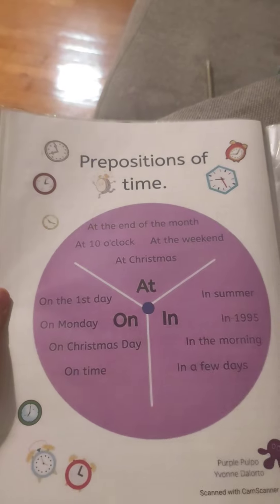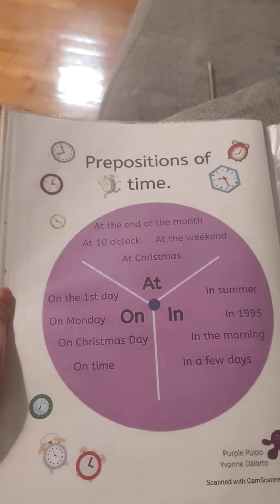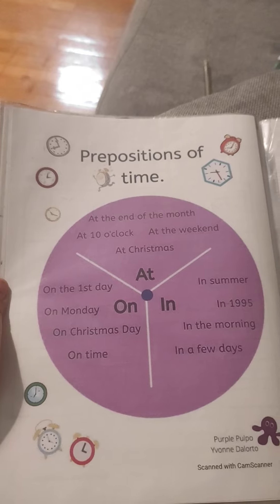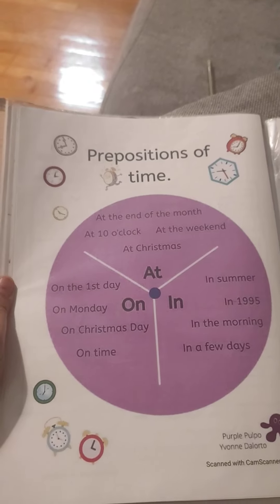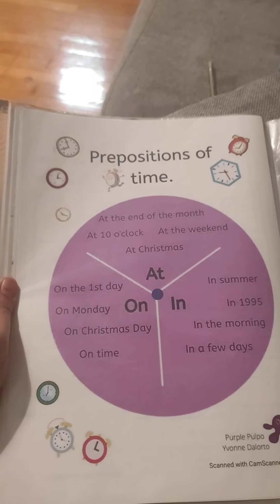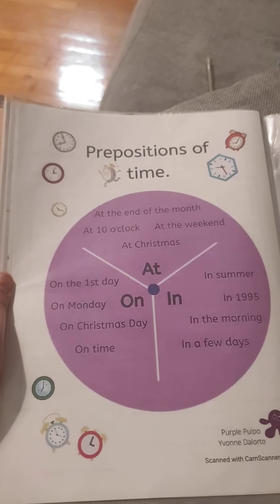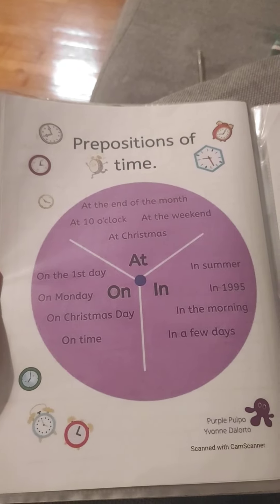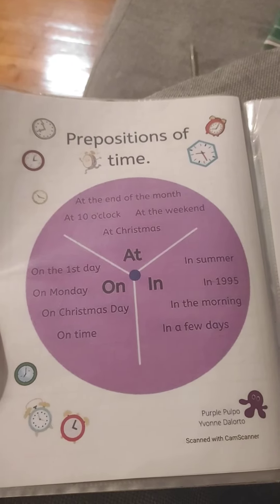Preposition of time — review. At the end of month. At 10 o'clock. At the weekend. At Christmas. On the first day. On Monday. On Christmas day. On time. In summer. In 1995. In the morning. In a few days.